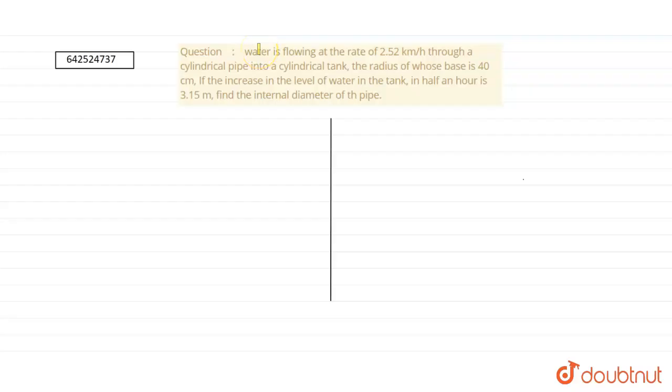Water is flowing at the rate of 2.52 kilometers per hour through a cylindrical pipe into a cylindrical tank, the radius of whose base is 40 centimeters. If the increase in the level of water in the tank in half an hour is 3.15 meters, find the internal diameter of the pipe.